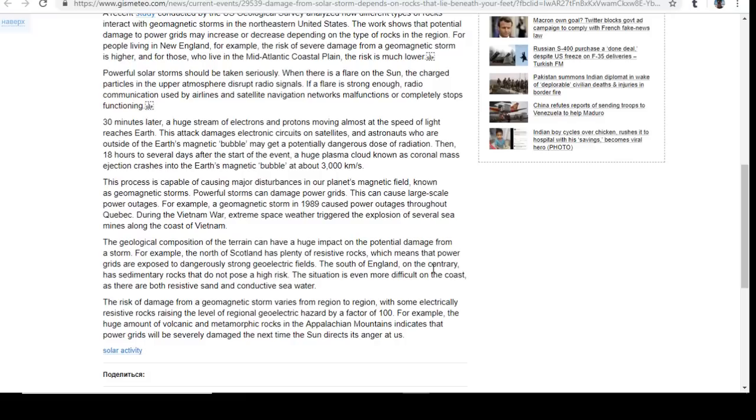The geological composition of terrain can have a huge impact on potential damage from storms. For example, the north of Scotland has plenty of resistive rocks, meaning power grids are exposed to dangerously strong geoelectric fields. The south of England has sedimentary rocks that don't pose high risk. The situation is even more difficult on coasts where there are both resistive sand and conductive seawater. The risk varies from region to region, with some electrically resistive rocks raising the level of regional geoelectric hazard by a factor of 100. The huge amounts of volcanic and metamorphic rocks in the Appalachian Mountains indicate that power grids will be severely damaged next time the sun directs its anger at us.